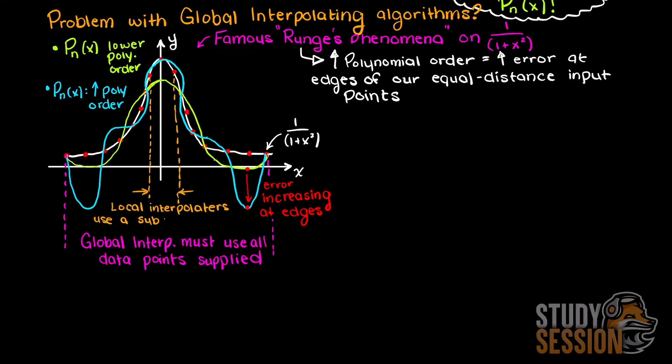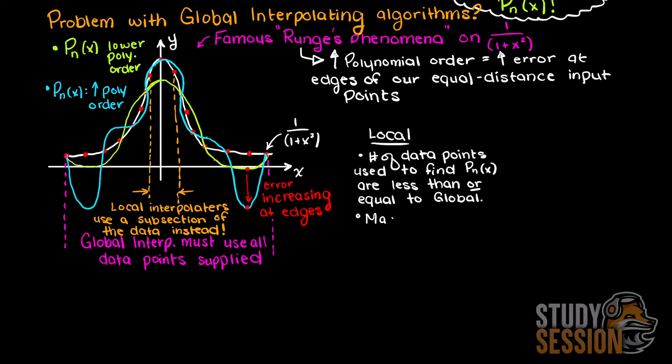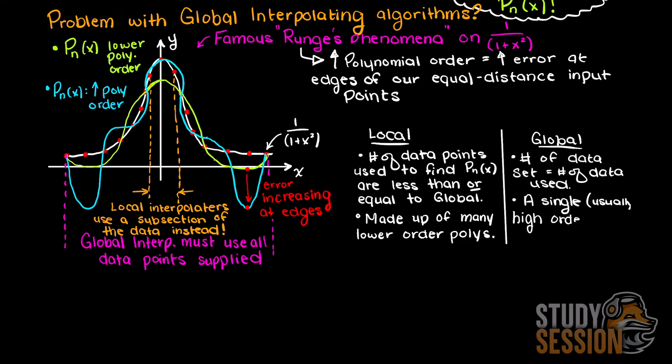A local interpolation method means that we are only going to be interpolating between a subsection of data inputs rather than the whole of the data set. Which basically means that instead of having one very high order polynomial that fits through all of our data set, we are going to have several much lower order polynomials to fit a continuous function through interpolation.